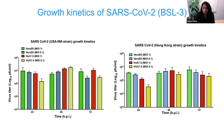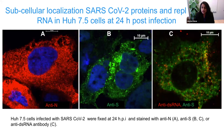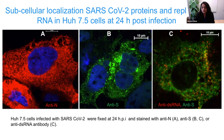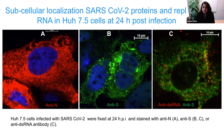We performed immunofluorescence analysis of SARS-CoV-2 infected cells using antibodies against the virus. Anti-N antibody targets the nucleocapsid protein of SARS coronavirus. Cells were infected and fixed at 24 hours post-infection and probed with antibodies against viral proteins. At 24 hours, there is good protein expression and virus replication, also detected by anti-dsRNA antibody, which can detect replicating virus. We selected 24 hours post-infection for our antiviral studies.